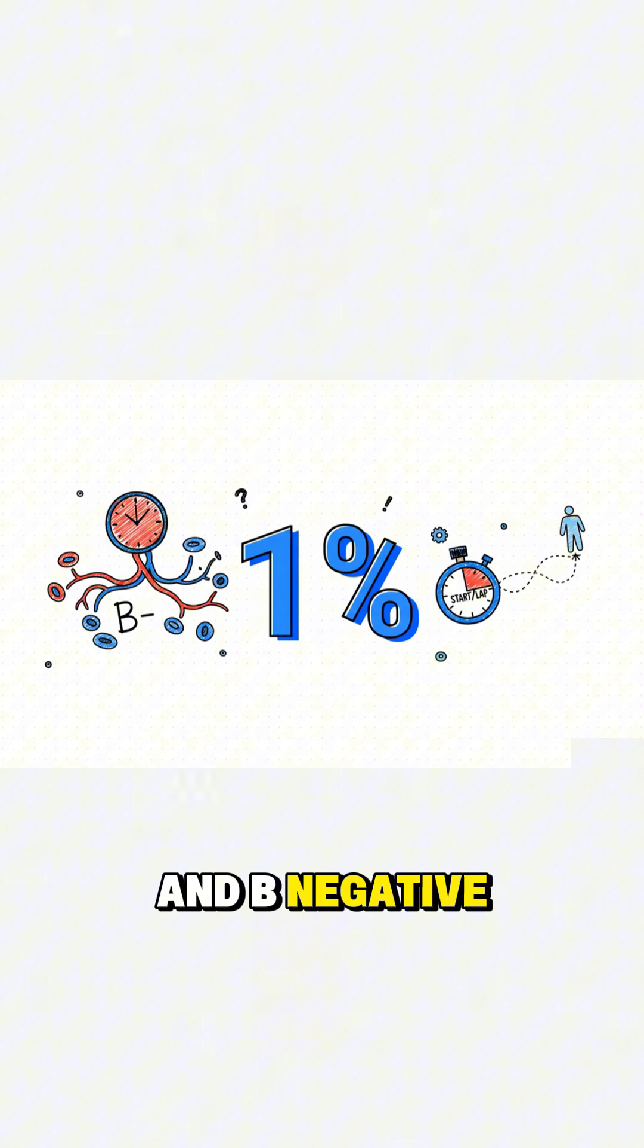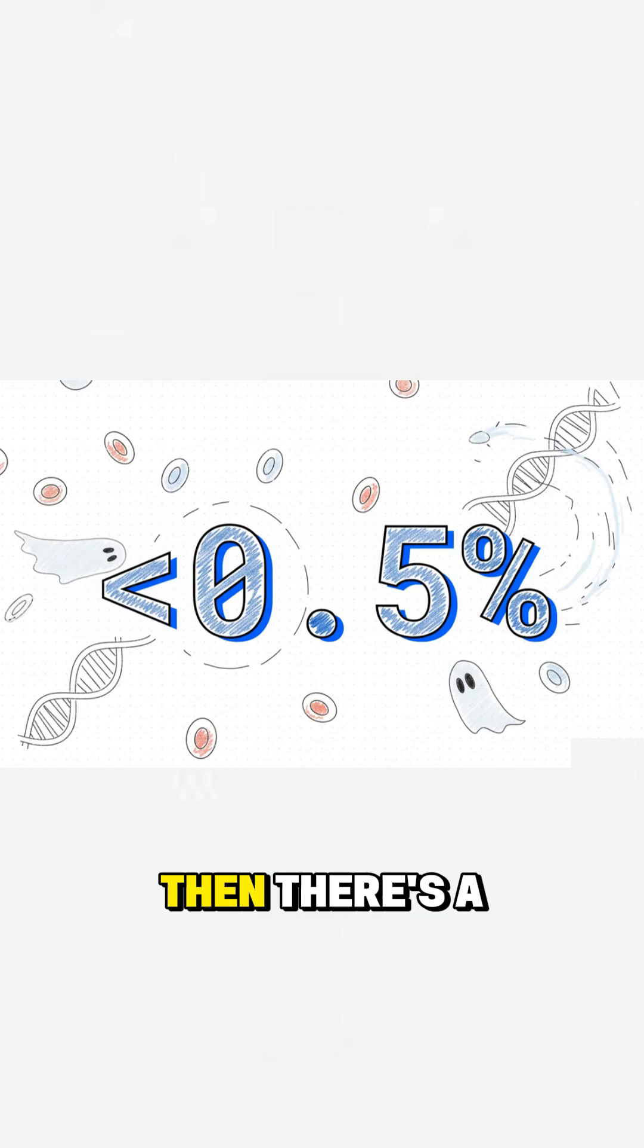And B negative, rarer still. Finding a match becomes a real race against the clock. Then there's AB negative. It's practically a statistical ghost. The absolute rarest.